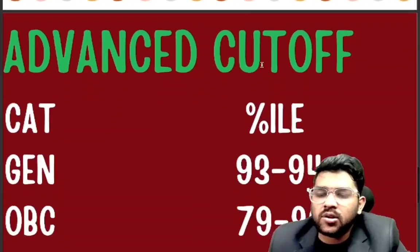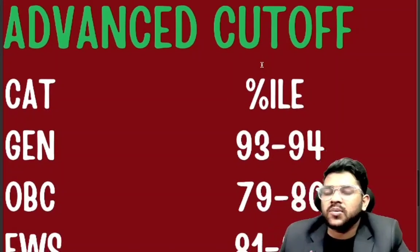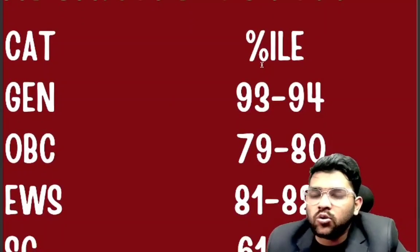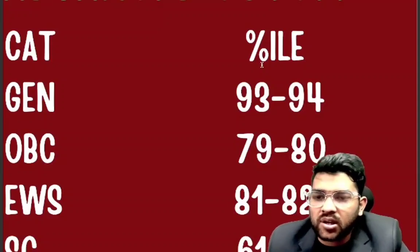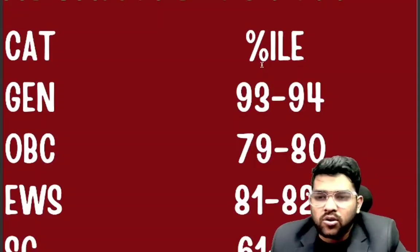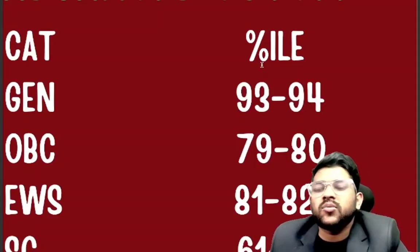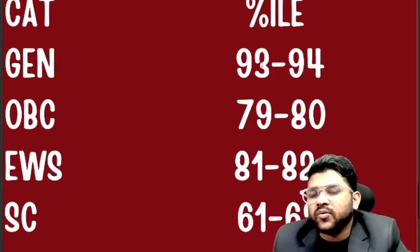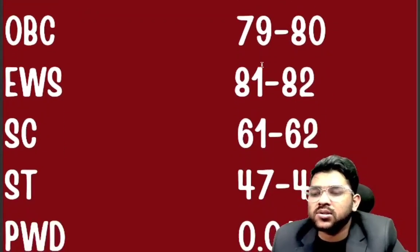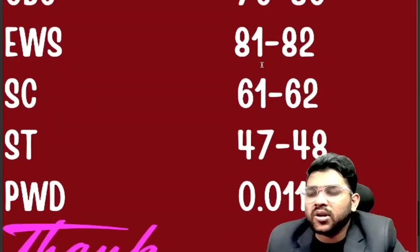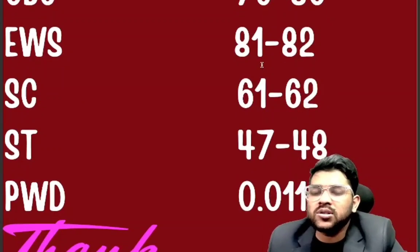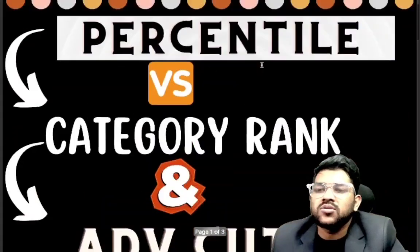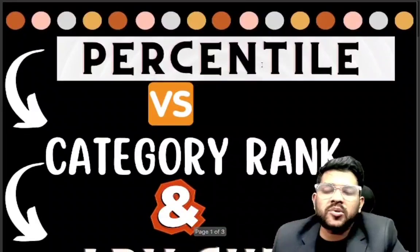For JEE Advanced cutoff: general 93 to 94 percentile; OBC 79 to 80 percentile; EWS 81 to 82 percentile. If you score this in first attempt or second attempt, you are qualified for JEE Advanced. SC cutoff is 61 to 62 percentile; ST 47 to 48 percentile; PwD 0.011 — essentially zero marks will also qualify.